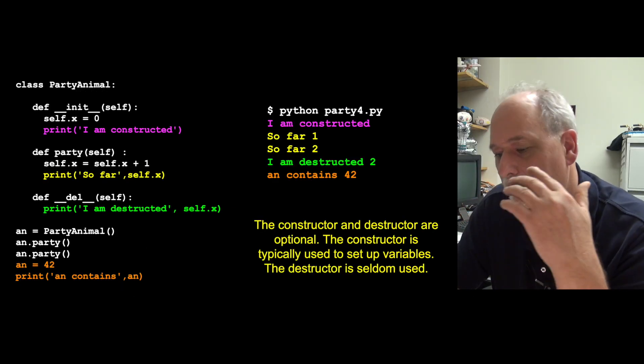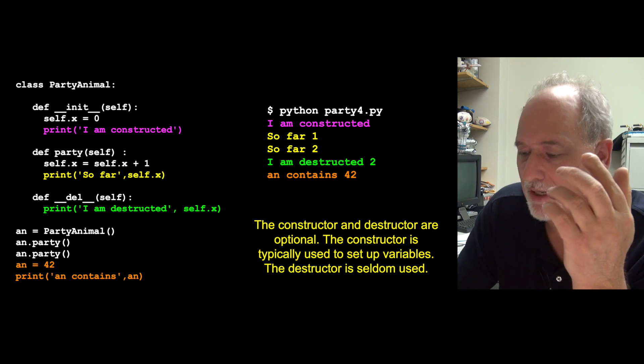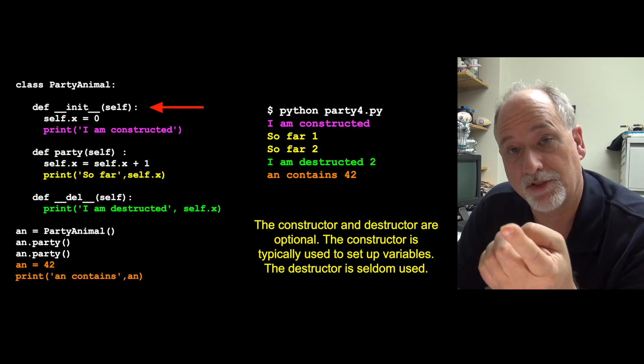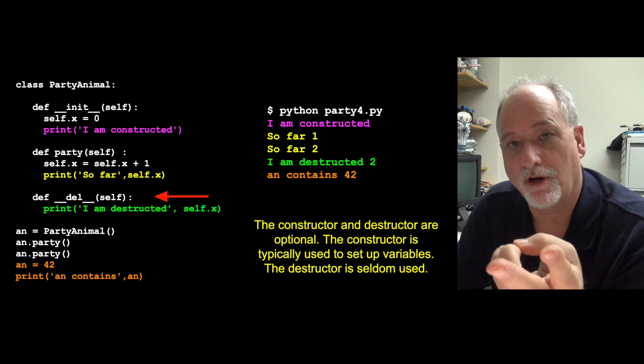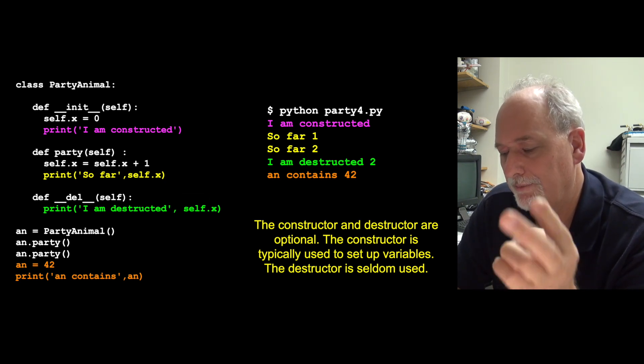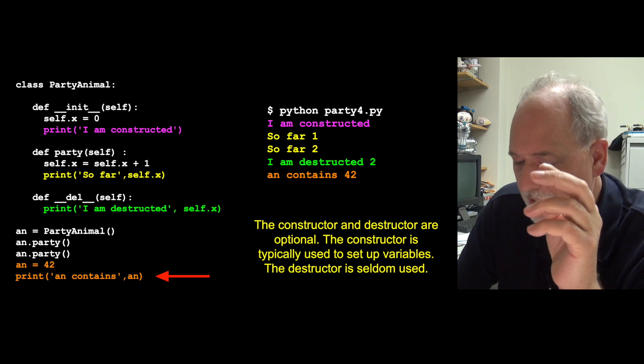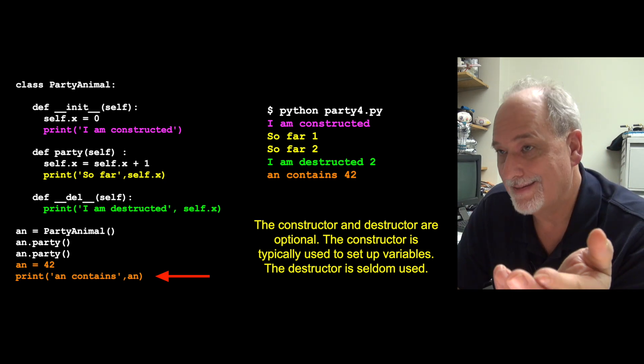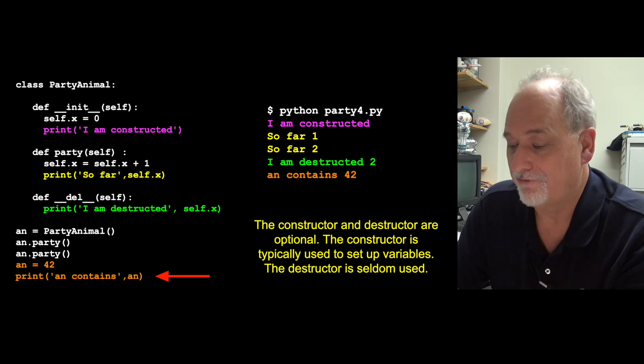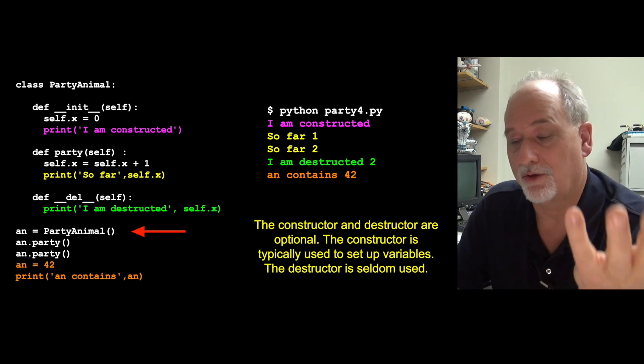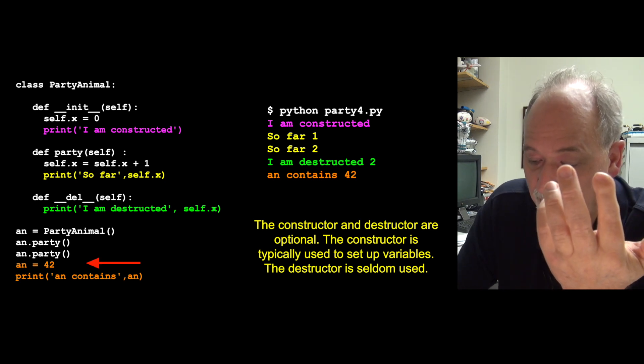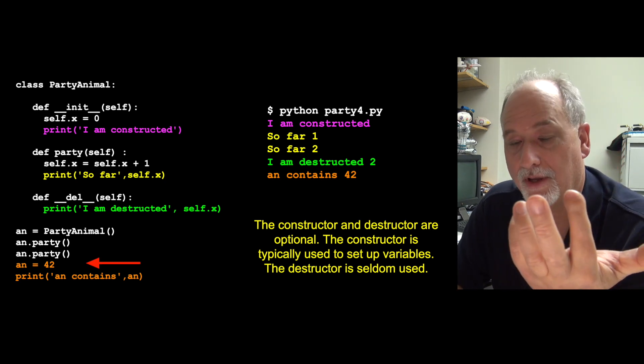So we are allowed as the builder of these objects to add these little chunks of code that says, I want to be involved at the moment this object is created, and I want to be involved at the moment that this object is destroyed. In this last line, an is no longer a party animal. An is now an integer. It's got a 42 in it. It's gone, it's been created, it was used, and then it was destroyed. You've got to be careful if you overwrite something, you sort of throw the object away.